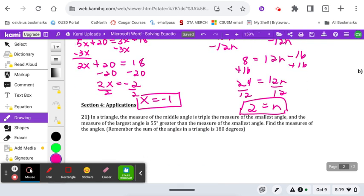In a triangle, the measure of the middle angle is triple the measure of the smallest angle. So we're going to call that the smallest angle, that's triple the smallest. And the measure of the largest is 55 greater than the smallest. Find the measure of the angles. So we know that the angles of the triangle all add up to 180 degrees. So I've got s plus s plus 3s, so that's 1, 2, 3, 4, 5 s's.